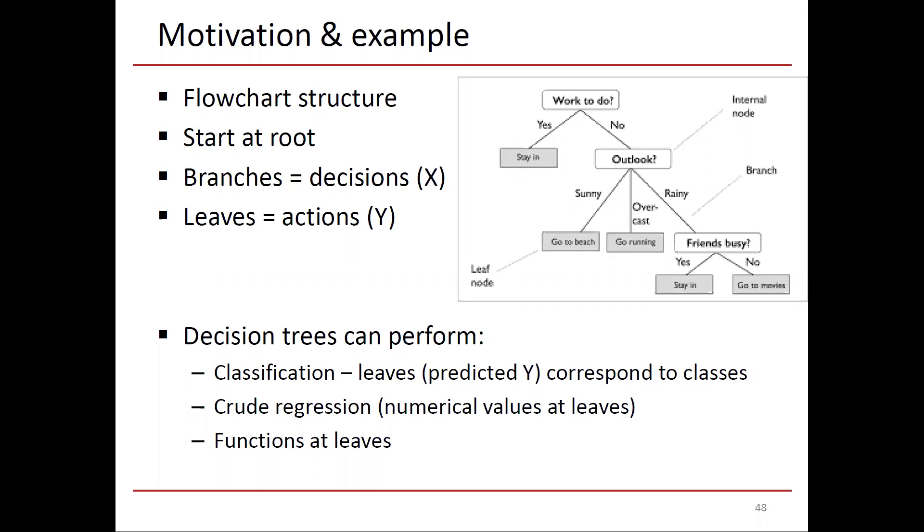Is it sunny? Is it overcast? Is it rainy? If it's sunny, you go to the beach. If it's overcast, you go running. If it's rainy, you check on your friends. So the leaf nodes here are your decision, what you do. And internal nodes are questions that you ask yourself leading to decisions, leading to eventually the actions, the activities performed in the leaf nodes.